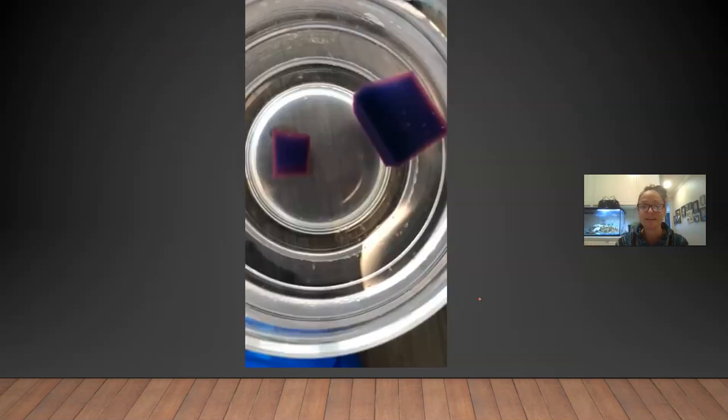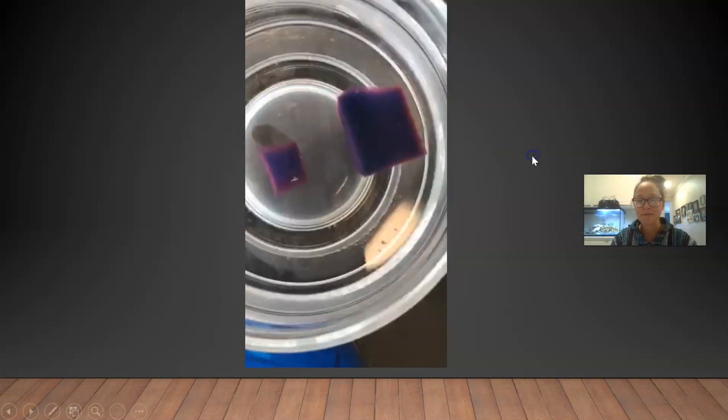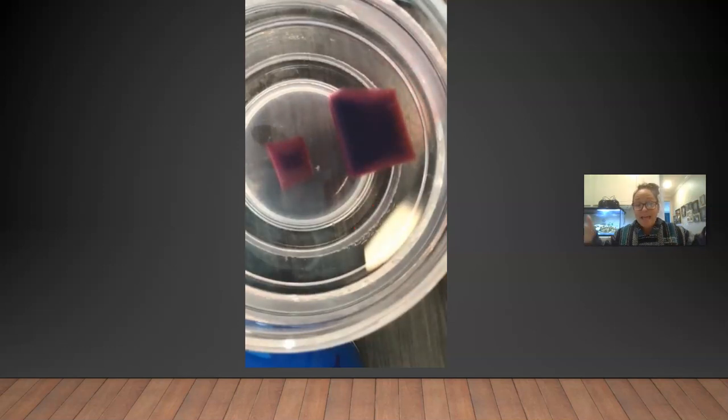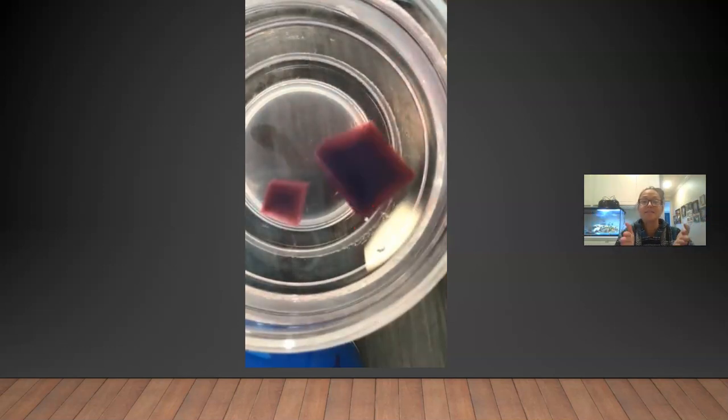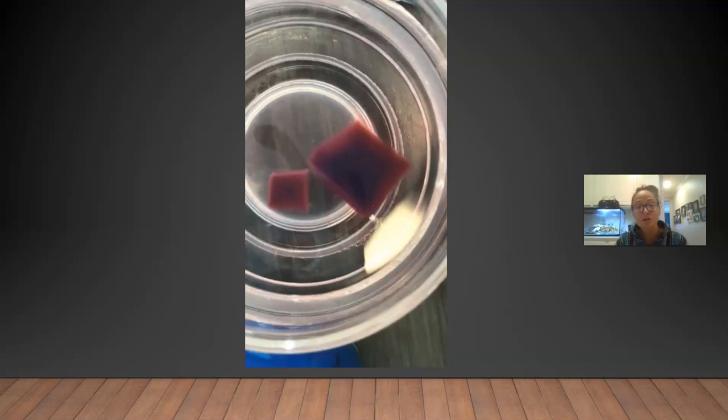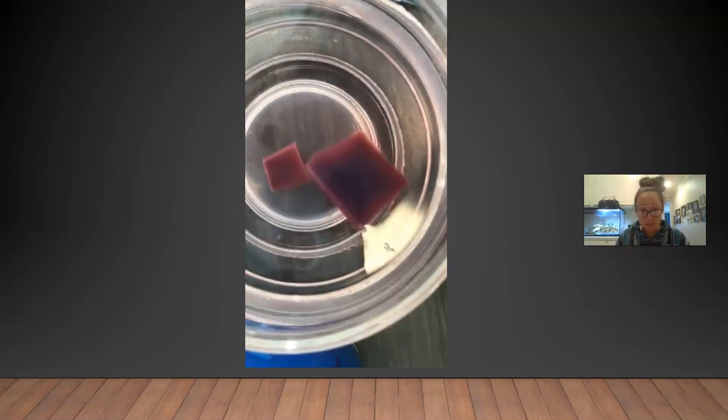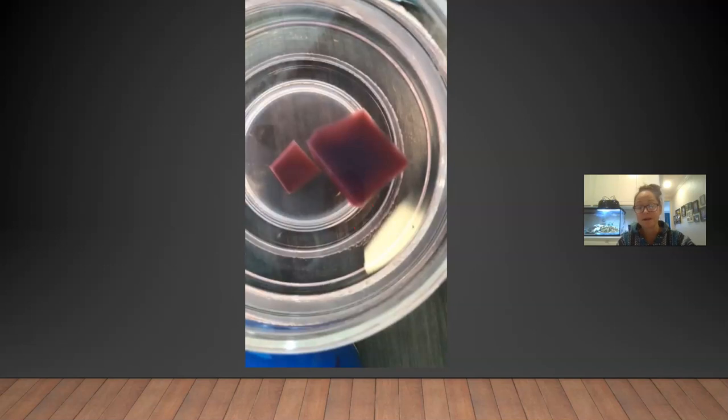And so here is a time lapse of the lab we did in class, where we had that agar. And so we dropped them into vinegar, which was an acid. And as the vinegar diffuses into the cube, you can see it change color. So you notice in the smaller cube, diffusion was more efficient, where now in the larger cube, if there was a mitochondria in the center in that dark purple area, it still would not have its oxygen.